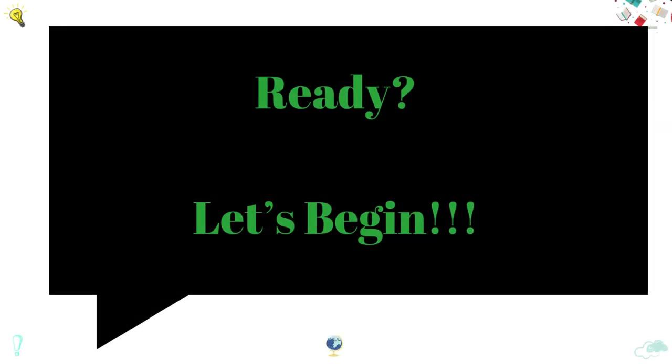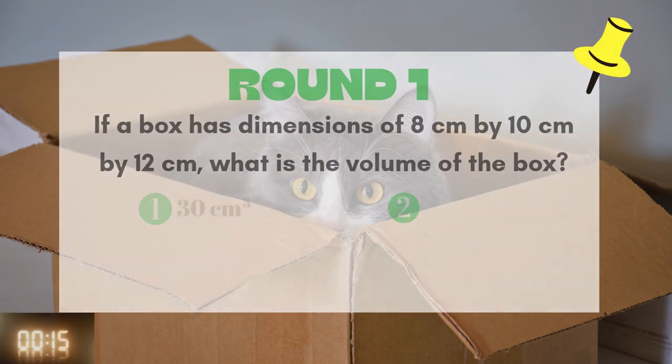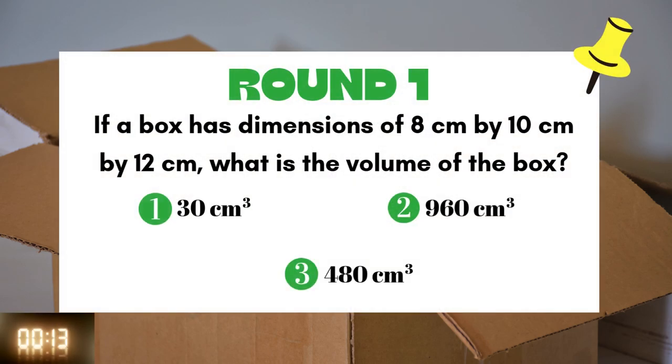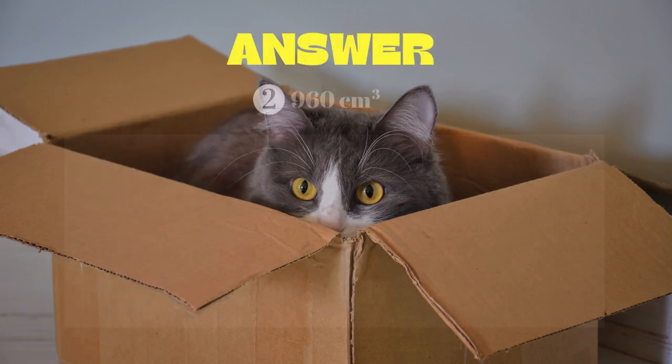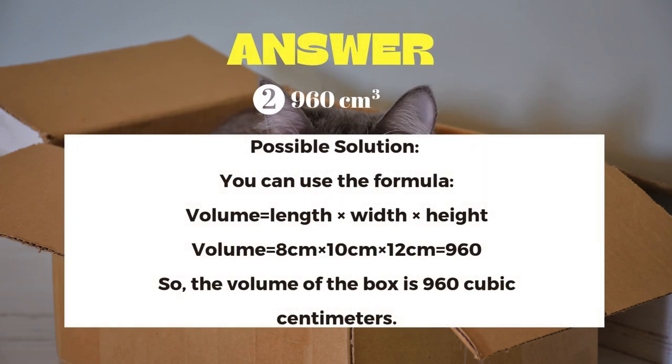Ready, let's begin. Round 1: If a box has dimensions of 8 centimeters by 10 centimeters by 12 centimeters, what is the volume of the box? The answer is 960 cubic centimeters.